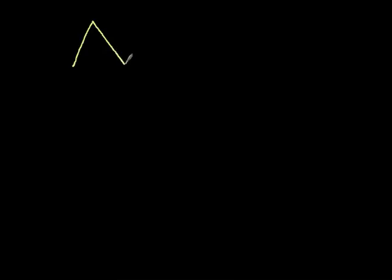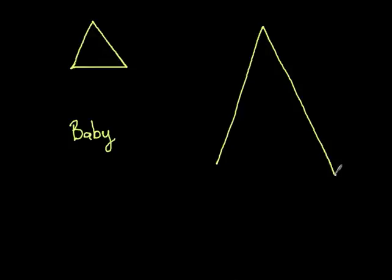Similar triangles are when you have a small triangle like this. We'll call this the baby triangle. We have a small triangle, and we also have a corresponding triangle that's bigger. We might call it the daddy triangle because it's bigger.